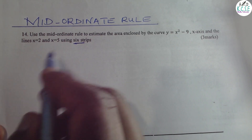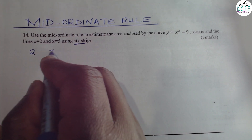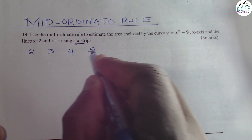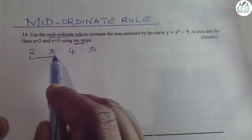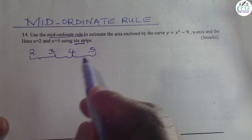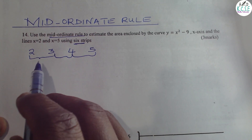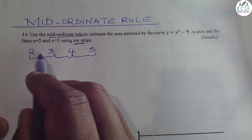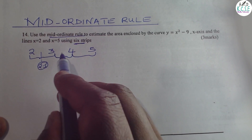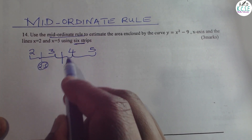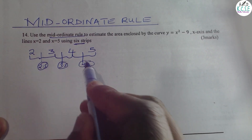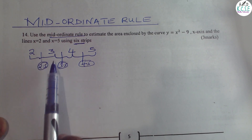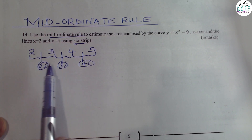We are given the interval between 2 and 5. We write these as 2, 3, 4, and 5. Remember, using the mid-ordinate rule we use the center of each strip — the mid-ordinate. For example, from 2 to 3 is one strip, 3 to 4 is another, and 4 to 5 is another. The mid-ordinate from 2 to 3 is 2.5, from 3 to 4 the mid-ordinate is 3.5, and from 4 to 5 the mid is 4.5.